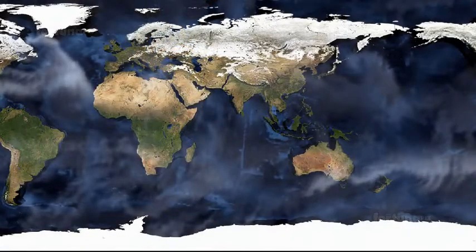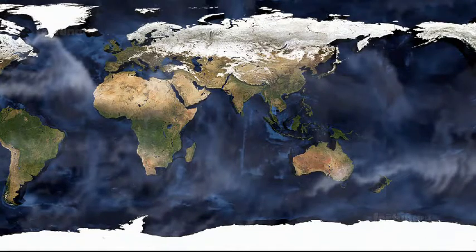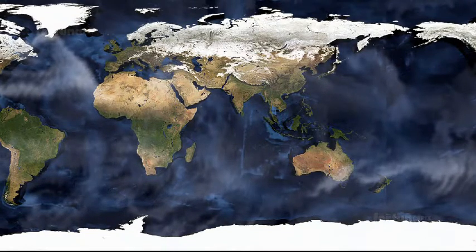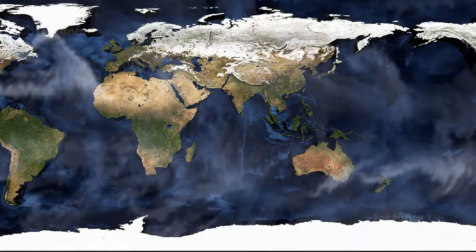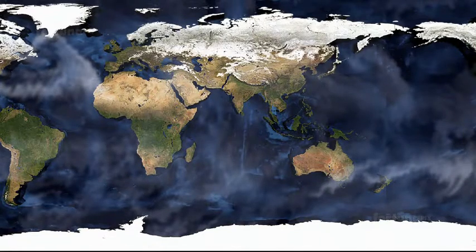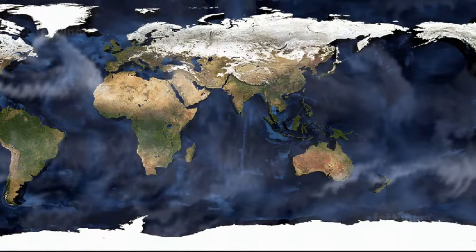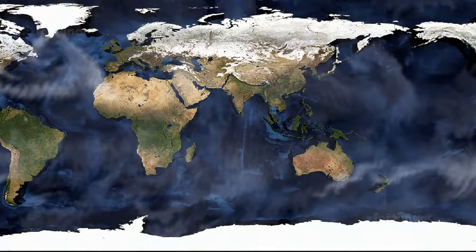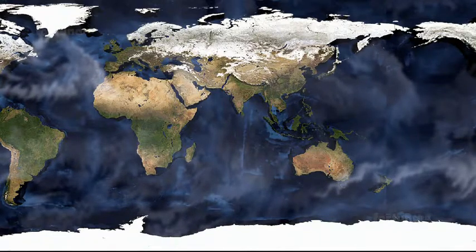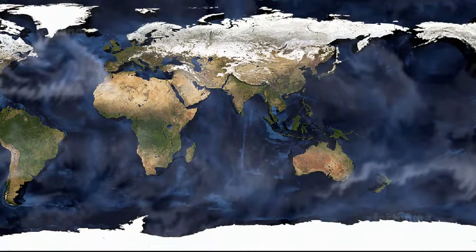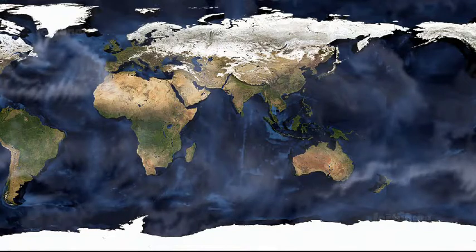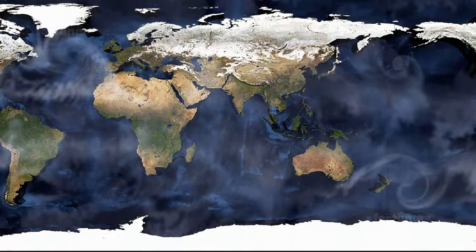Winds around the world blow from areas of high pressure to areas of low pressure. But the winds and ocean currents the winds create won't move in a direction that is parallel to the force that causes them. Instead, they will deviate from their straight-line path and curve to the side due to the Coriolis effect.